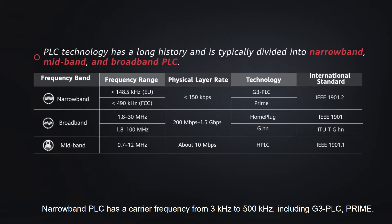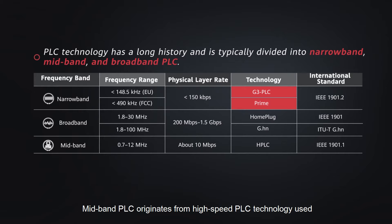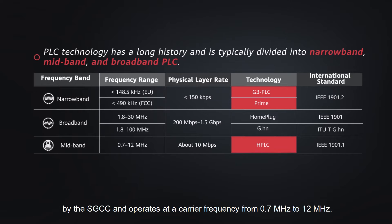Narrowband PLC has a carrier frequency from 3 kHz to 500 kHz, including G3 PLC, Prime, and IEEE 1901.2. Narrowband PLC is typically used for remote meter reading.